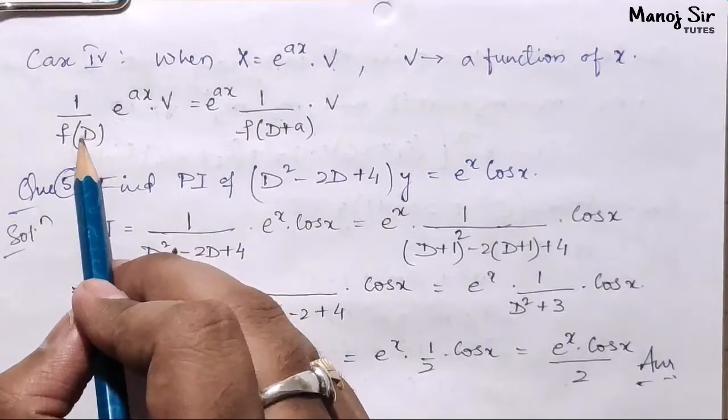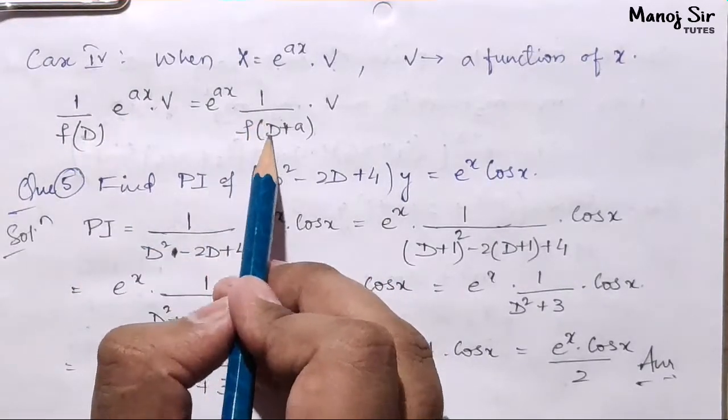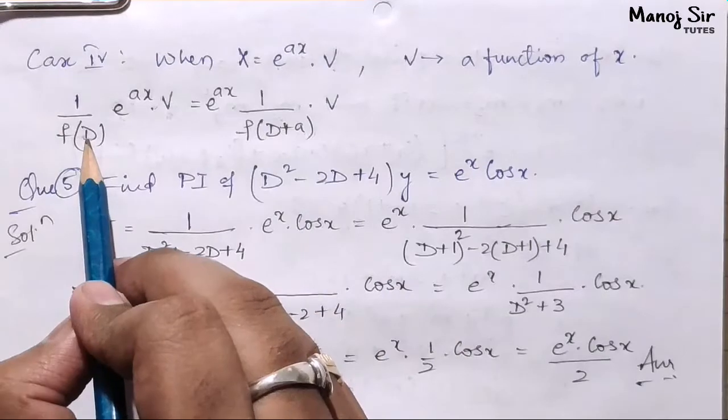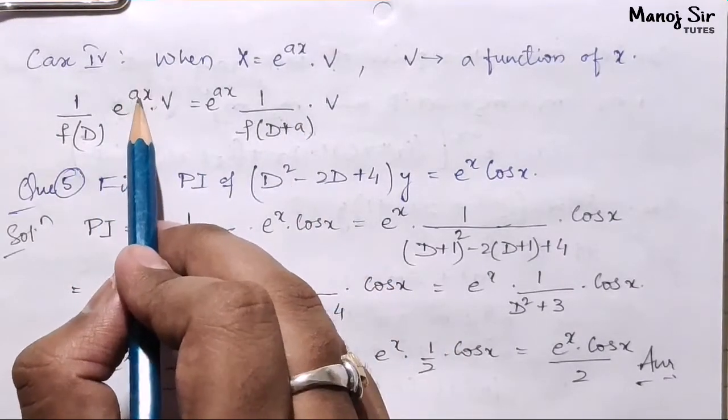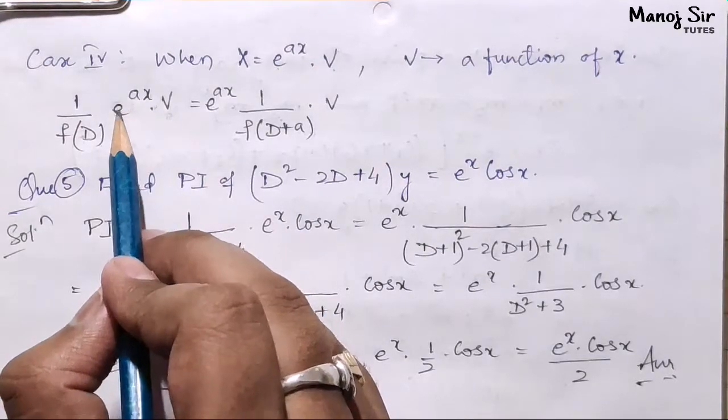In place of D, we write D plus a, where a is the coefficient of x in the exponential. Let's solve this problem: find PI of (D² - 2D + 4)y = e^x cos x.